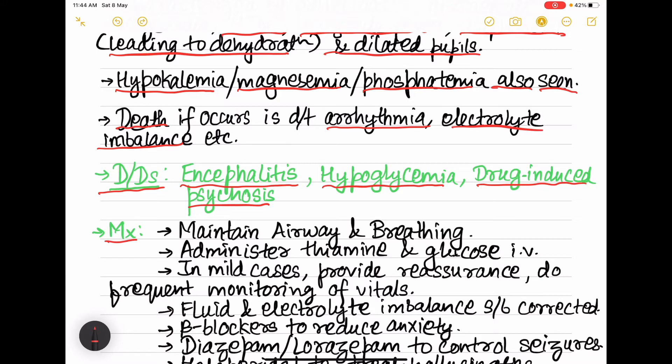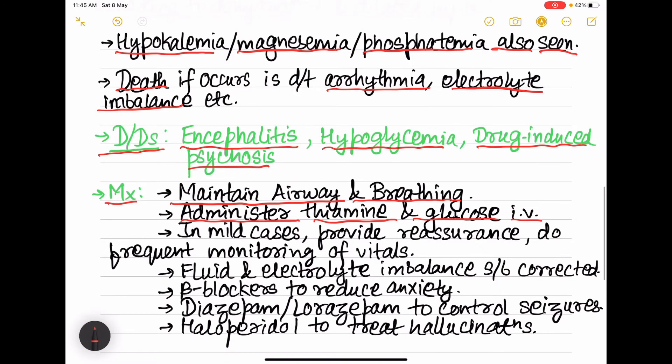Now coming to the management of alcohol withdrawal. First is we have to maintain the airway and breathing, then we have to administer thiamine and glucose IV. We should take the blood samples also. In mild cases provide reassurance to the patient and do frequent monitoring of the vitals.